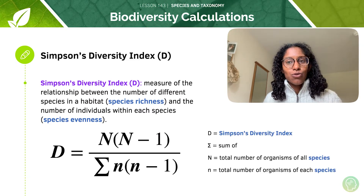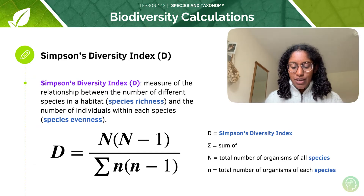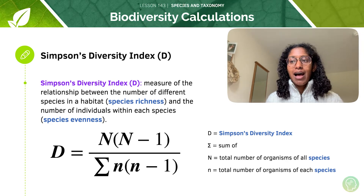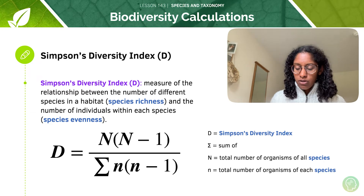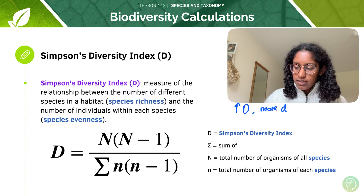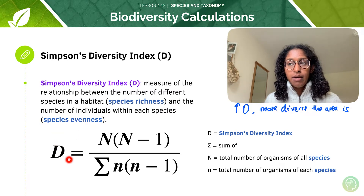Now there's a really handy little formula here. I know this might look a little bit daunting, but we're going to break it down and show you how simple it is. This capital letter D is for the diversity index — it's just going to give us a number which tells us how diverse the population is. The higher D is, the more diverse the area is. This is an important equation because we're using both species richness and species evenness to calculate the diversity index.